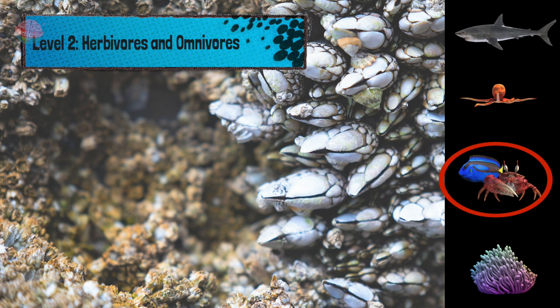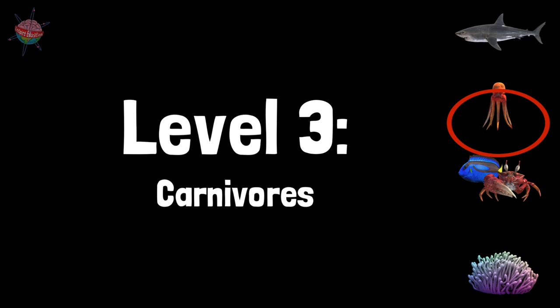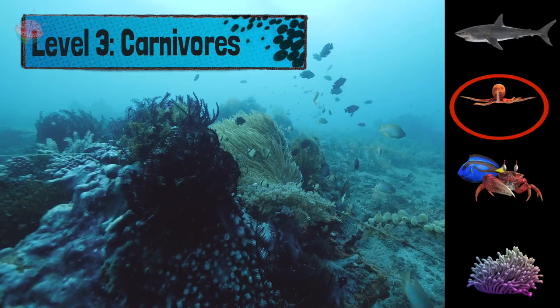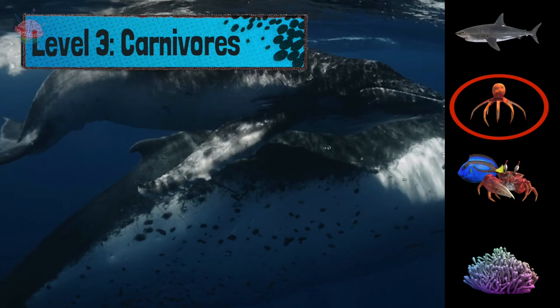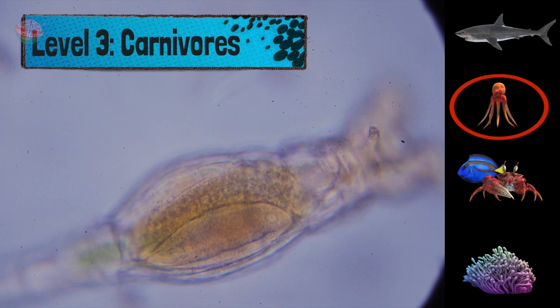The ocean is also full of tiny zooplankton — drifting animals like barnacles, mollusks, krill, and jellyfish — which eat phytoplankton, bacteria, and bits of dead plants and animals. Level 3: Carnivores. Unlike herbivores, which only eat plants, or omnivores, which eat both plants and animals, carnivores only eat other animals. The smallest carnivores, such as sardines, squid, octopuses, and many species of fish, mostly eat zooplankton.